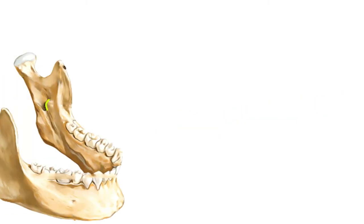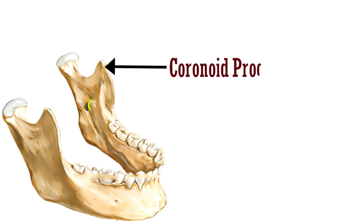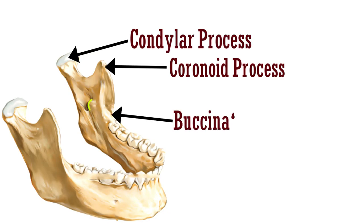Let's have a look at these features. This anterior process is the coronoid process, and this posterior process is the condylar process. On the inner surface of the ramus we have this crest for the buccinator muscle.